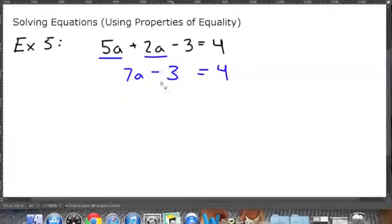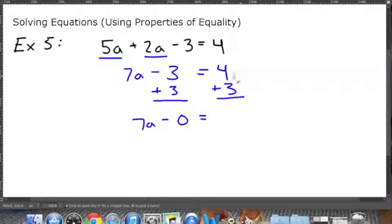Now we just solve like we've been doing. To get rid of this subtraction we're going to add 3 to both sides. So 7a minus a negative 3 plus a positive 3 is just 0 so 7a minus 0 equals 4 plus 3 which is 7. So now we just have 7a equals 7. We're going to divide by 7 to get rid of this multiplication and since 7 divided by 7 is 1 and a divided by 1 is just a, we're going to have a equals 7 divided by 7 which is 1. So a is 1 in this equation.